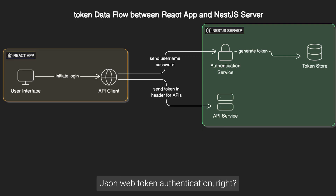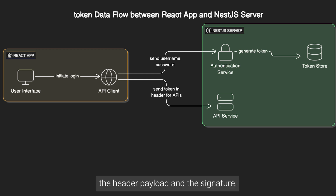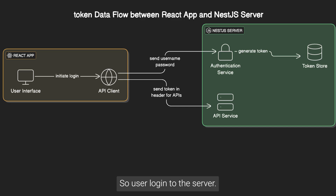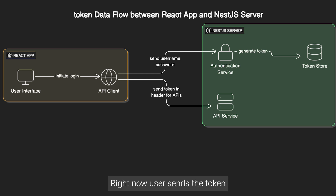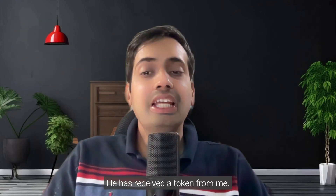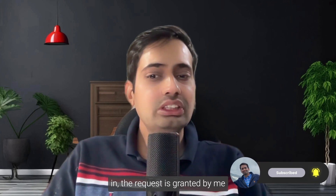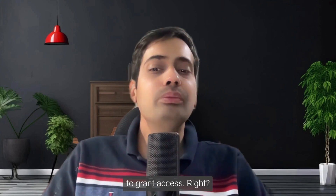Token-based authentication is also very popular — JSON Web Token authentication. You receive a JWT, which contains a header, payload, and signature — essentially a big long token string. The user logs into the server, the server generates the token and sends it to the user's device. The user then sends the token with each and every request in the authorization header. This token tells the server that the user is already authenticated, and the server validates the token — if valid, it grants access.